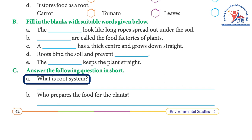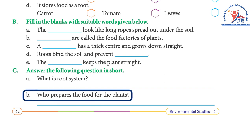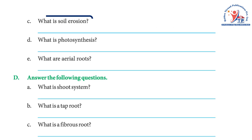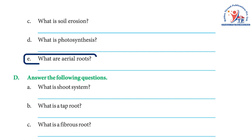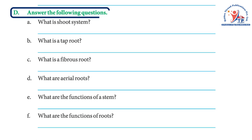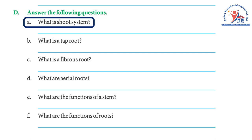Exercise C — Answer in short. a) What is the root system? The part of the plant under the soil forms the root system. b) Who prepares food for the plants? Leaves prepare the food for the plants in the presence of sunlight, air, water, and chlorophyll. c) What is soil erosion? Heavy rain and strong winds wash or blow away the topsoil — this is called soil erosion. d) What is photosynthesis? Plants making food in the presence of sunlight, water, air, and chlorophyll is called photosynthesis. e) What are aerial roots? Big trees like banyan have numerous roots that grow downward from the branches — they are called aerial roots.